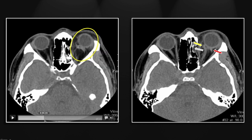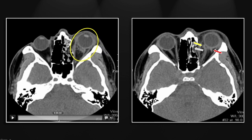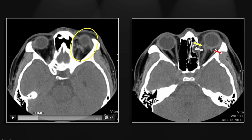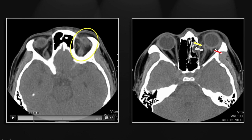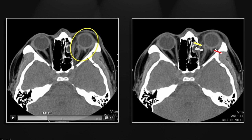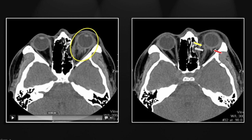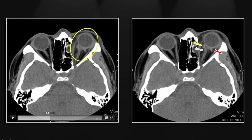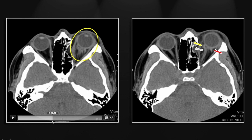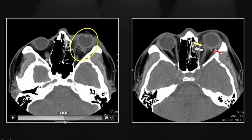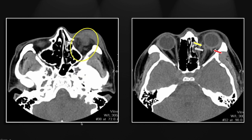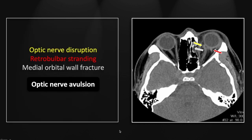Going top to bottom, there is stranding and density ascending to the superior aspect of the orbit. Right there you can see the optic nerve is displaced medially from where it should be inserting on the posterior aspect of the globe. That is a case of an optic nerve avulsion.